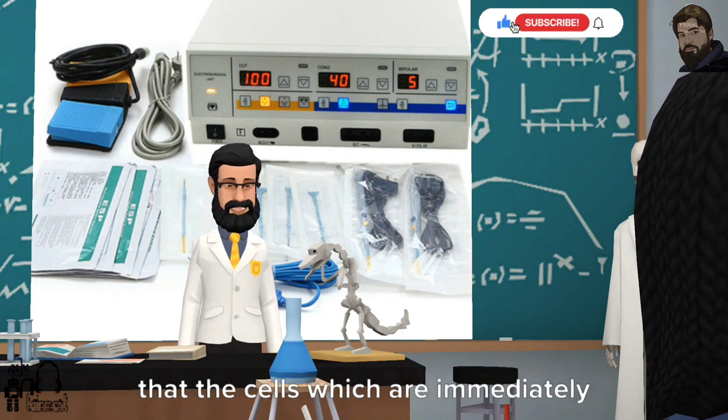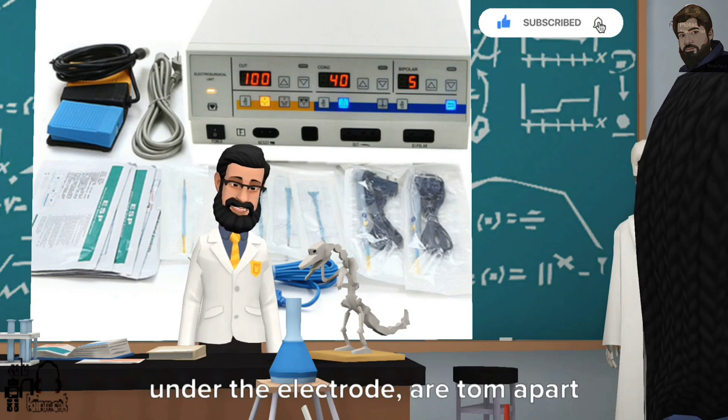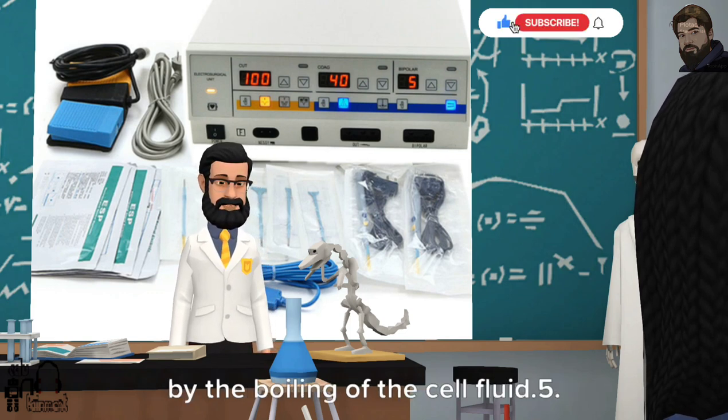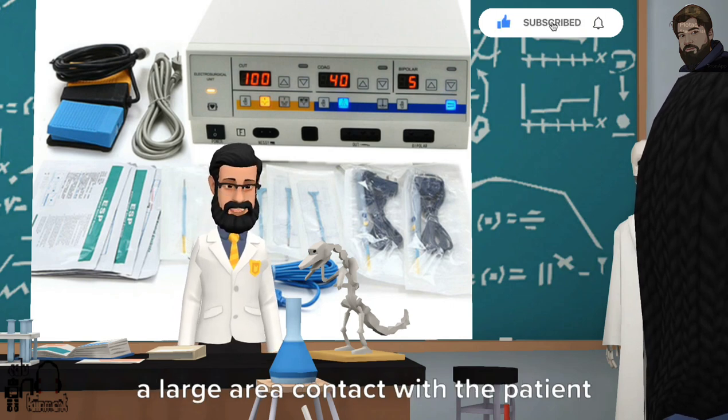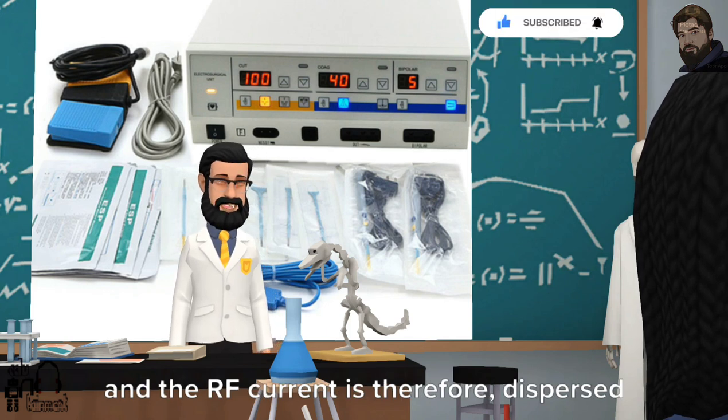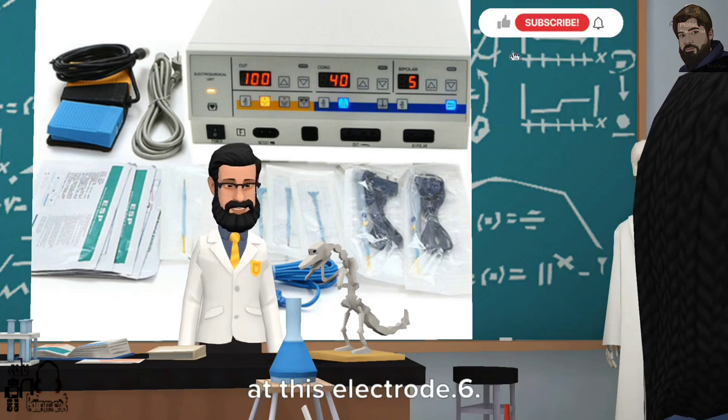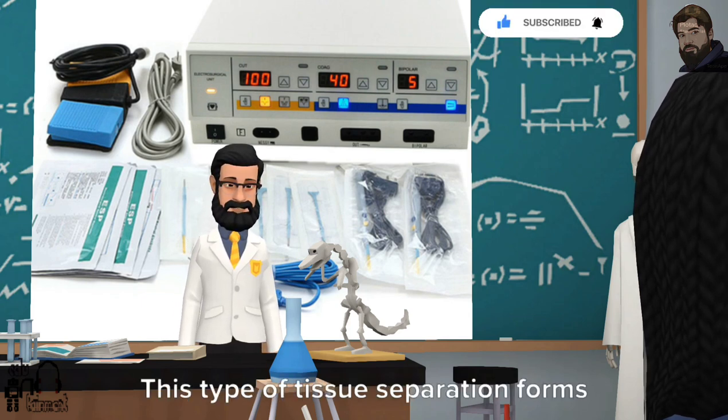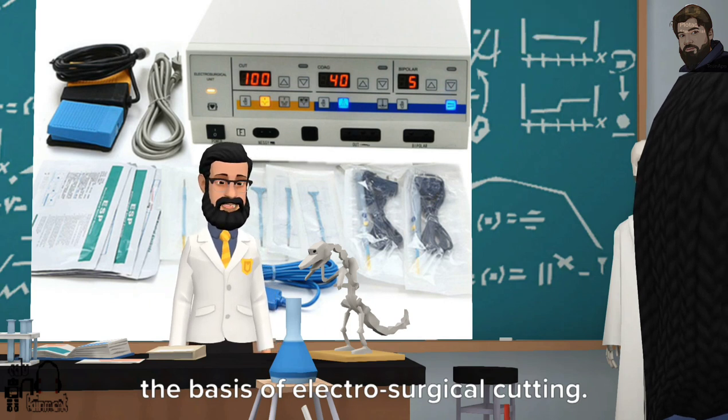The tissue is heated to such an extent that the cells which are immediately under the electrode are torn apart by the boiling of the cell fluid. The indifferent electrode establishes a large area contact with the patient and the RF current is therefore dispersed so that very little heat is developed at this electrode. This type of tissue separation forms the basis of electrosurgical cutting.